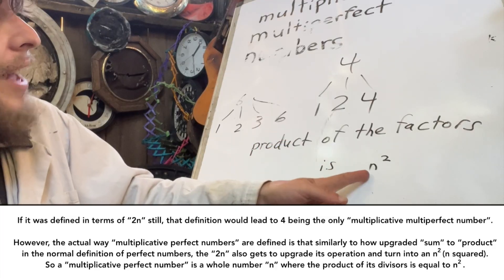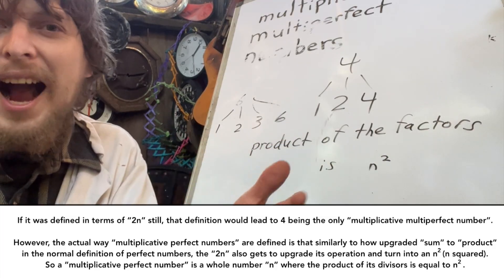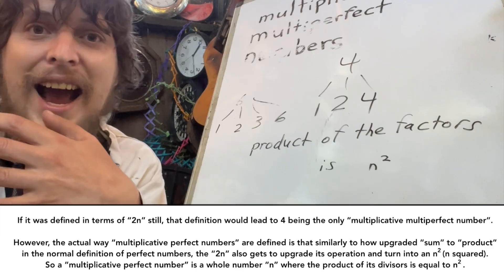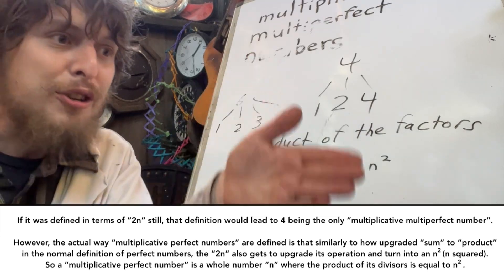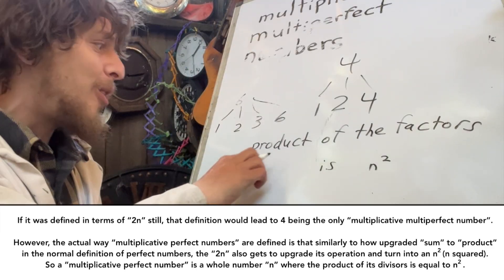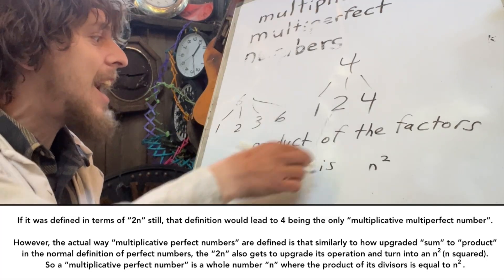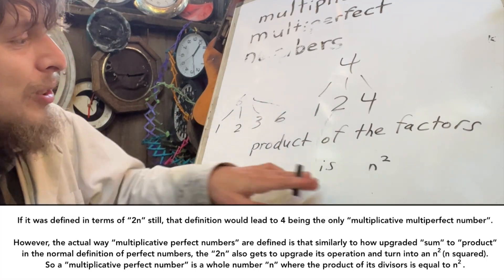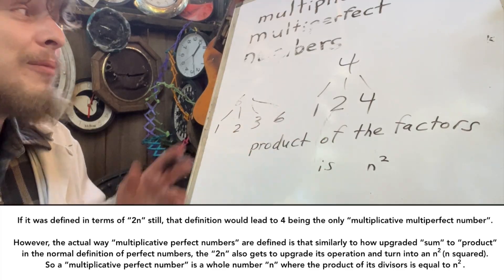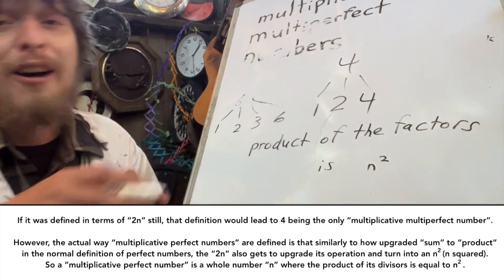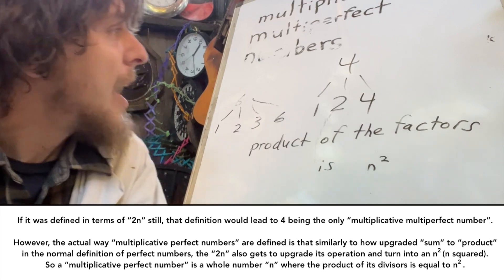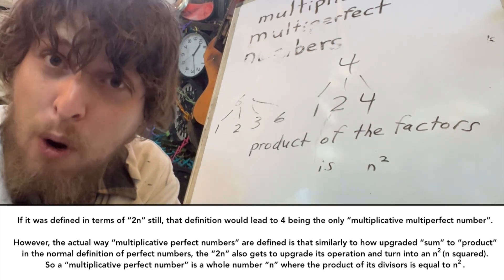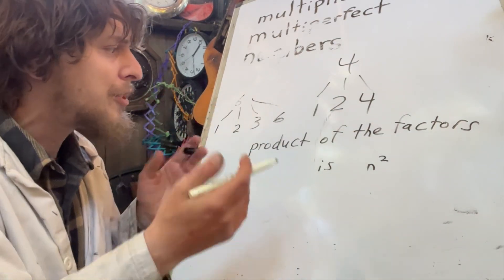In many contexts, n squared ends up acting sort of like the next level of 2n. And so, product being, in many contexts, the next level of sum, not only makes this feel more fair, but makes it work better. It makes us have a family of numbers it applies to, as opposed to just the number 4. But which numbers does it apply to?